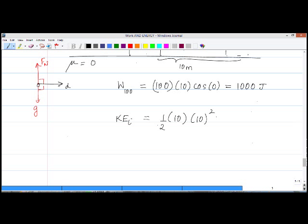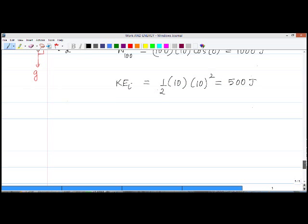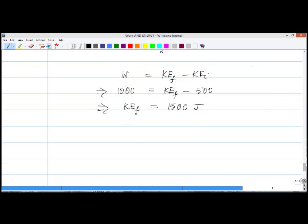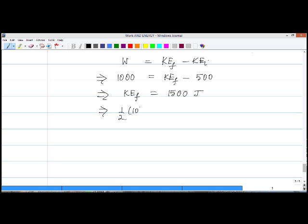What we are looking for is the final velocity, and to achieve that let's find the kinetic energy final first. Let's plug everything into W equals KEf minus KEi, which implies that 1000 equals KEf minus 500, so KEf equals 1500 joules. Now we know what KEf is: one half times 10 times Vf squared equals 1500 joules.